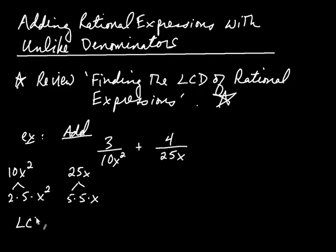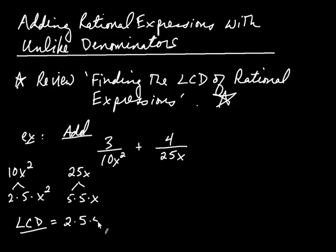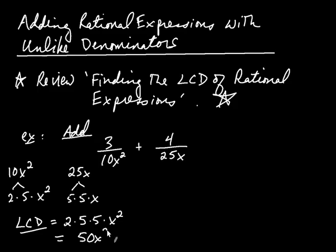To find the LCD, you compare the factors. Looking at twos first: one 2 versus no twos, so you take one 2. Then the fives: one 5 versus two 5s, so you take two 5s. Then the x's: two x's versus one x, so you take two x's. When you multiply all this together — 2 times 5 is 10, times 5 is 50 — your LCD is 50x squared.